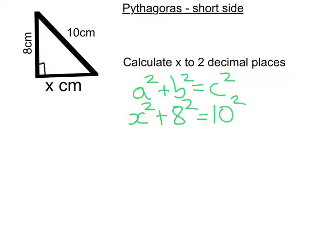Let's do the squaring. x squared is x squared. 8 squared, 8 times 8 is 64, and 10 squared is 100.